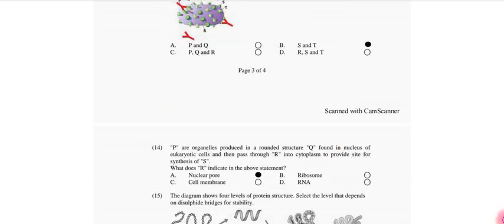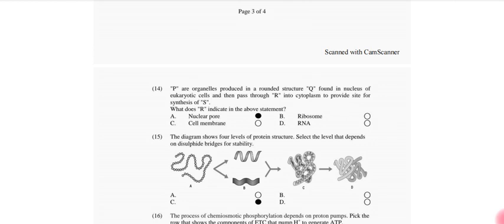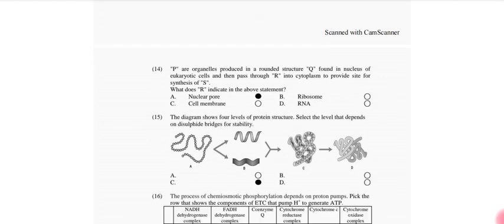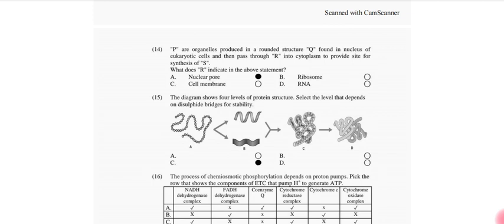14. Pre-organelles produced in rounded structure Q found in nucleus of eukaryotic cells and then passed through R into cytoplasm to provide site for synthesis of R, S. What does R indicate in this above statement? So that is nuclear pore. The diagram shows four levels of protein structures. Identify the levels that depend on disulfide bridges for stability. So that is option C, tertiary structure.